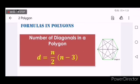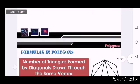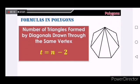If you are finding the number of diagonals that can be drawn inside the polygon, the formula is D equals n over 2 times n minus 3. If finding the number of triangles that can be formed by diagonals drawn through the same vertex, the formula is T equals n minus 2.